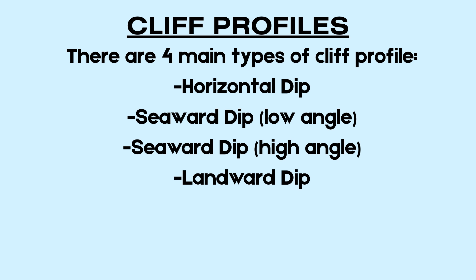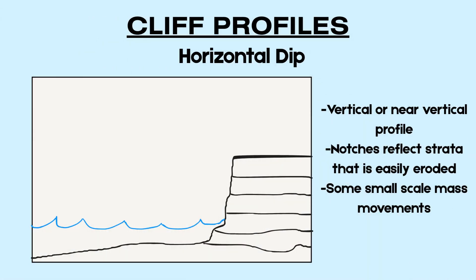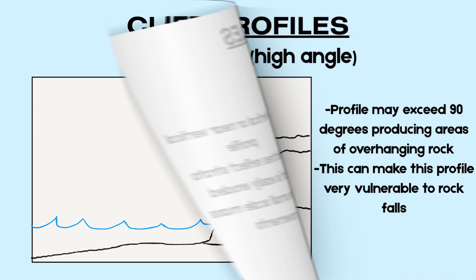There are four cliff profiles to know: horizontal dip, seaward dip low angle, seaward dip high angle, and landward dip. Firstly, horizontal dip — this cliff profile is vertical or near-vertical in profile. Notches in the cliff reflect the strata that is more easily eroded, and there can be some small-scale mass movements in this cliff profile.